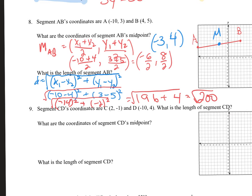Name your perfect squares — 4, 9, 16, 25, 36, 49, 64, 81, 100. Does 100 divide 200? Yes! So 200 equals 2 times 100. The square root of 100 is 10. So this simplifies to 10 square root 2. That is your simplified answer for the length of segment AB.